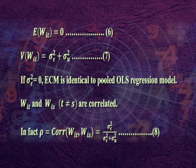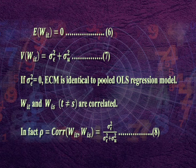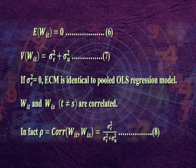There is a test named the Hausman test which can decide whether ECM is the appropriate model. From the assumptions, we find E(W_it) = 0 — equation 6, and Var(W_it) = σ²_ε + σ²_U — equation 7. If σ²_ε = 0, ECM is identical to the pooled OLS regression model. In equation 7, the error term is homoscedastic. However, W_it and W_is where t ≠ s are correlated. In fact, ρ = correlation(W_it, W_is) = σ²_ε / (σ²_ε + σ²_U) — equation 8. If we do not account for this correlation structure, estimating ECM by OLS gives inefficient estimators. The most appropriate method here is the method of Generalized Least Squares (GLS).